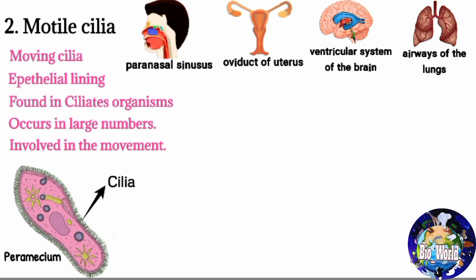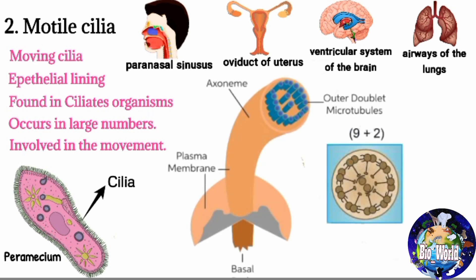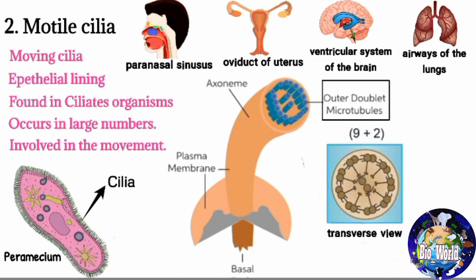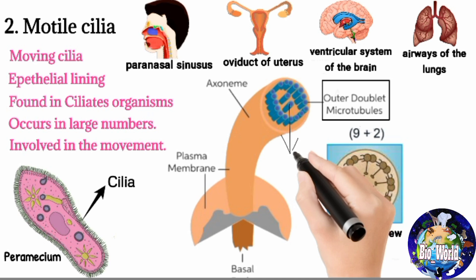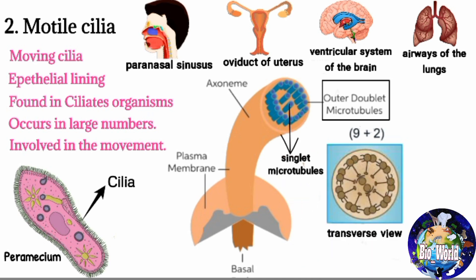Motile cilia have a nine-plus-two arrangement of microtubules in the axoneme, meaning there are nine pairs of peripheral doublet microtubules and two centrally located singlet microtubules, which are responsible for the motility of cilia. Motile cilia are also anchored to the cell by means of a basal body.